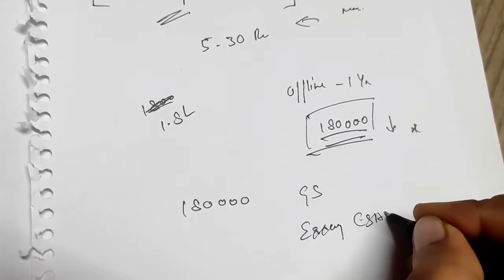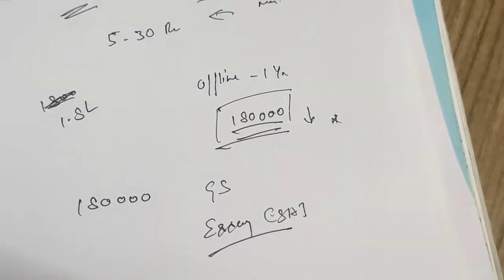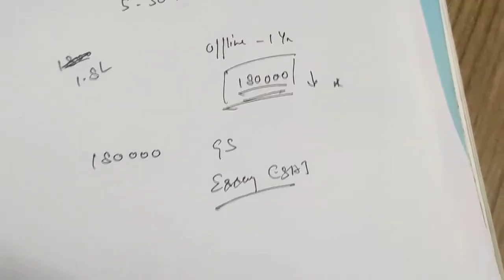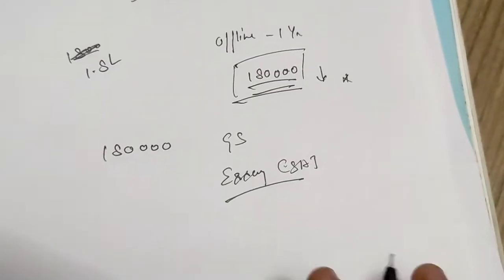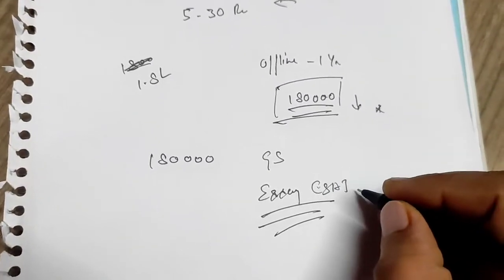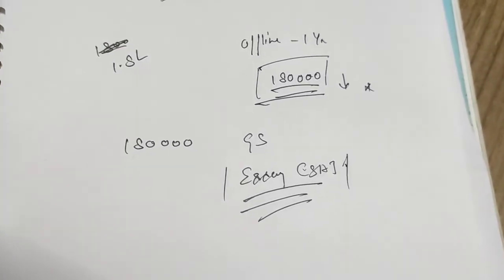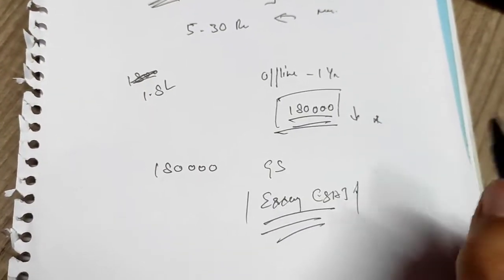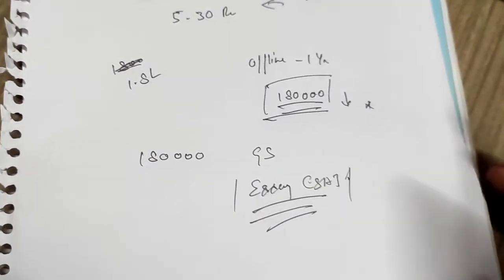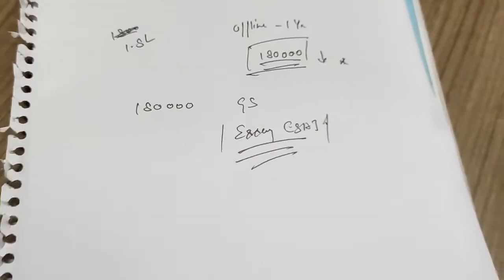These two things—Essays and CSAT—online you will get. You will get an app where they will be available. So these are the two things. They told me that you will get online material, and then you will get a monthly magazine of Vision, offline classes, and there will be some other things which I will make in the next video.